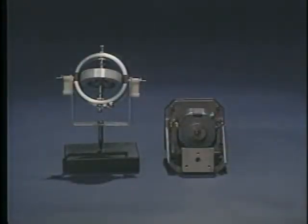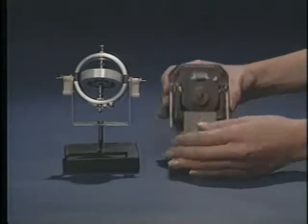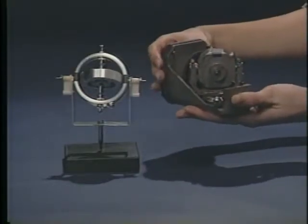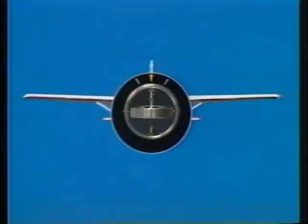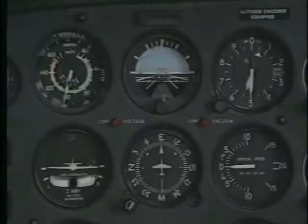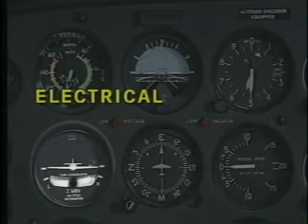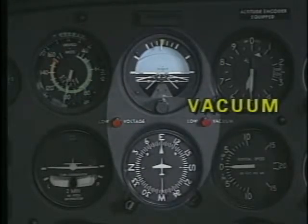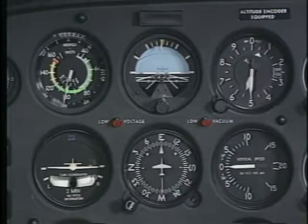The primary element of each gyroscopic instrument is a heavily constructed spinning gyro mounted in gimbals. If the gyro is freely or universally mounted, it will remain in a fixed position no matter where you move its base. This degree of stability is known as rigidity in space. If the gyro is mounted in an instrument so the airplane can rotate about it, the aircraft's movements will be displayed on the instrument face.